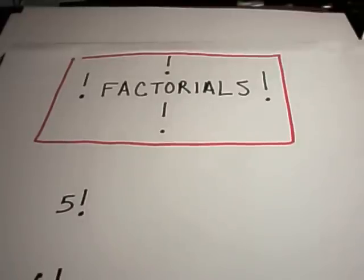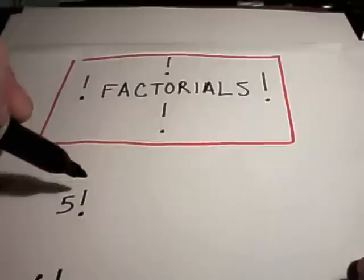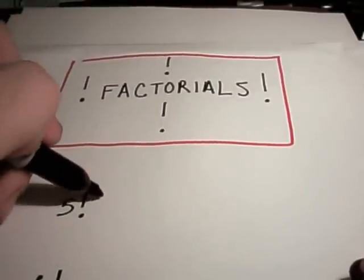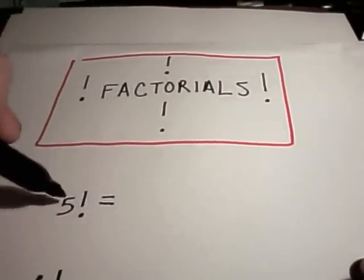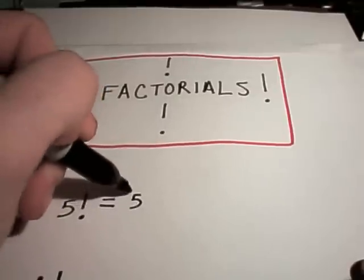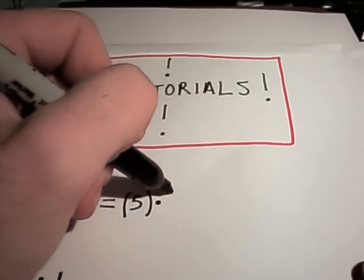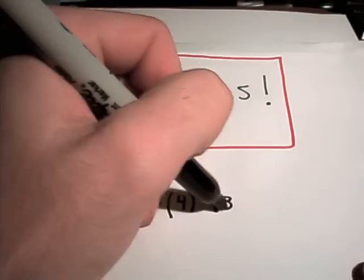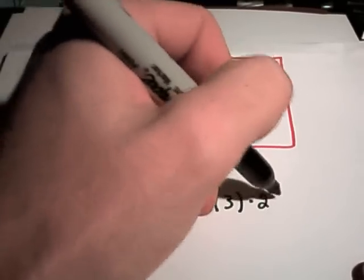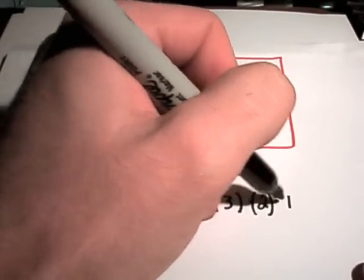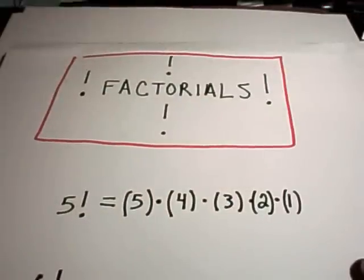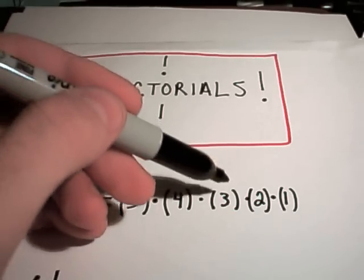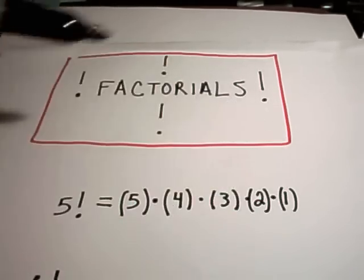The basic idea - we'll just do a couple examples. 5 factorial is simply a shorthand for starting with the number 5, and then you multiply it by every number that's one smaller than it. 5 times 4 times 3 times 2 down to 1, and then you stop.